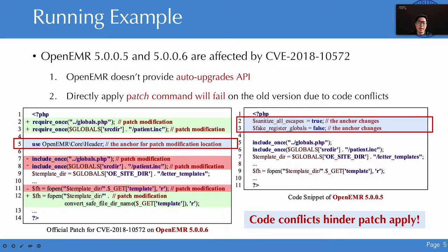Let's take a real vulnerability as an example. Both versions of OpenEMR are vulnerable to the public CVE. Unfortunately, OpenEMR does not provide an auto-upgrade API, and when we tried to apply the patch to an old version via the patch command, the old version reported a code conflict error because the patch could not identify the modified location, due to code changes in line 2 and line 3 of the old version.